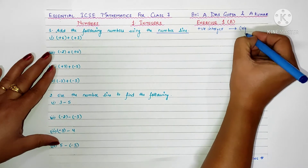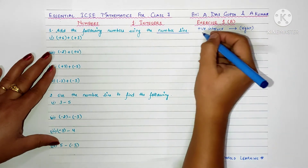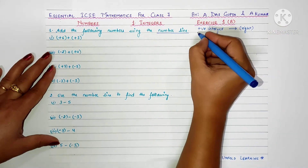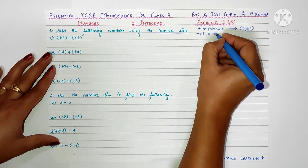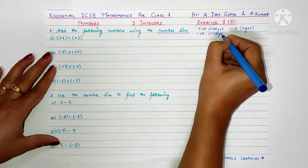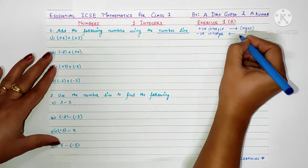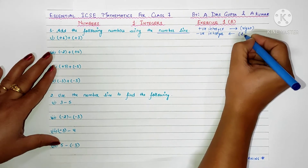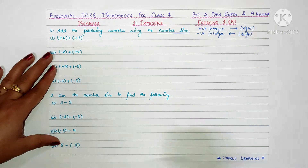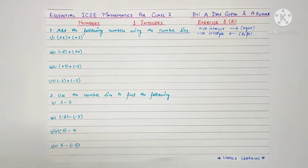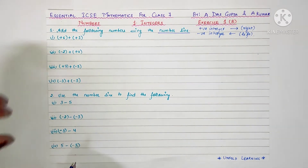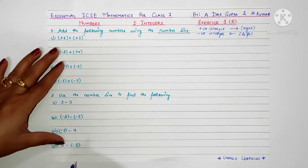When we add any positive integer, we need to move towards the right. And when we add any negative integer, we move towards the left. So in addition: for positive integers we go right, and for negative integers we go left.